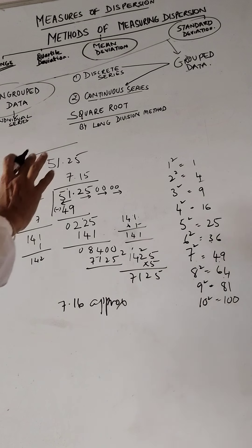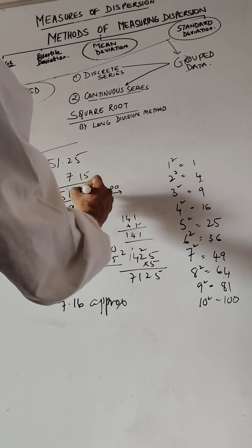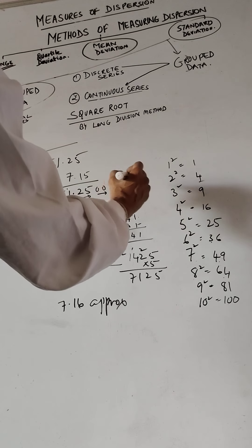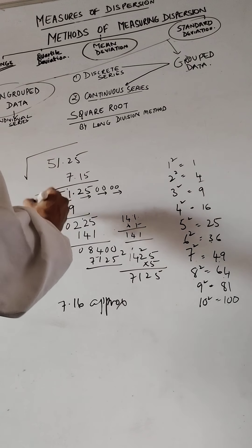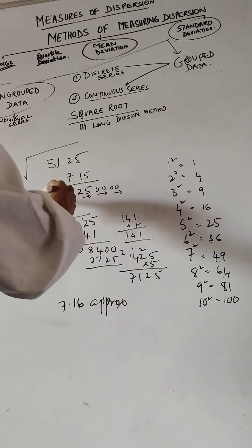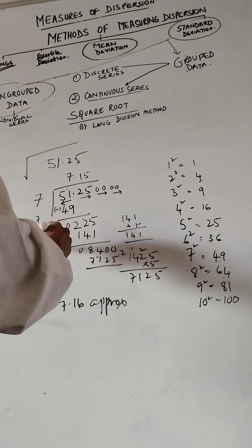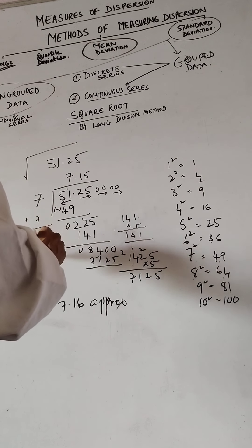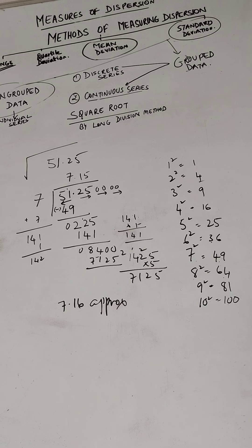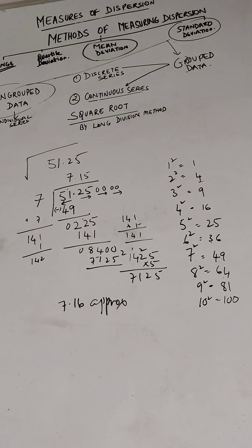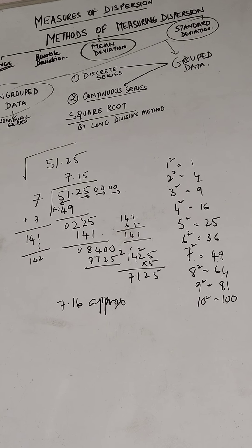So to summarize: after the decimal point, pairing begins from left to right — that's the key difference. Otherwise remember that the quotient and the divisor must always be the same, and on the divisor side you add the previous digit up. That's how, by the long division method, we can work out the square root. Please practice these — you've likely done this in seventh or eighth class, so go back to those books and practice.